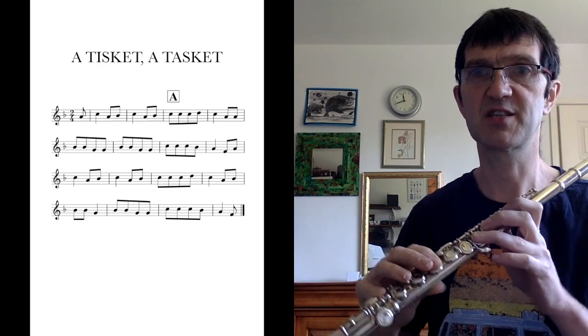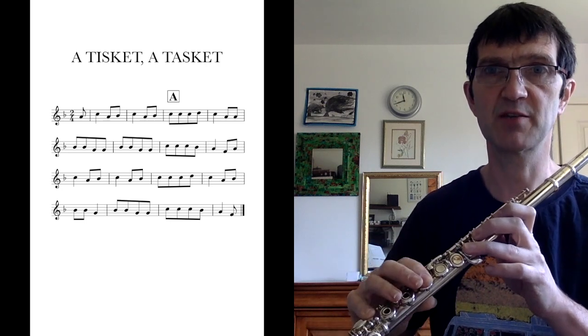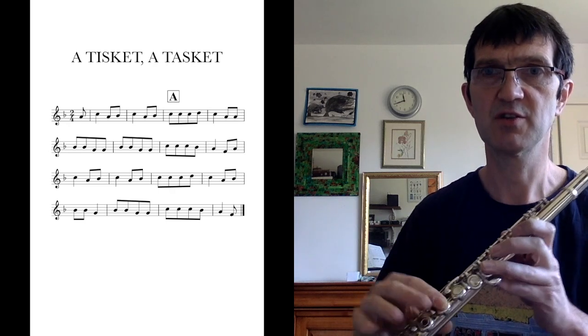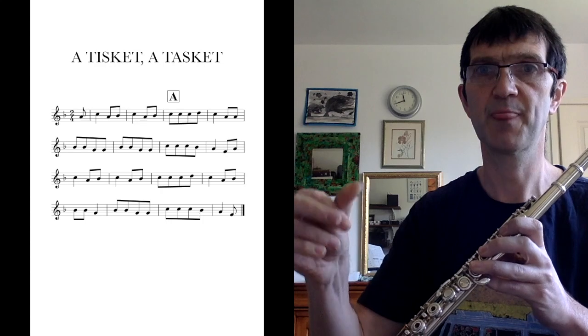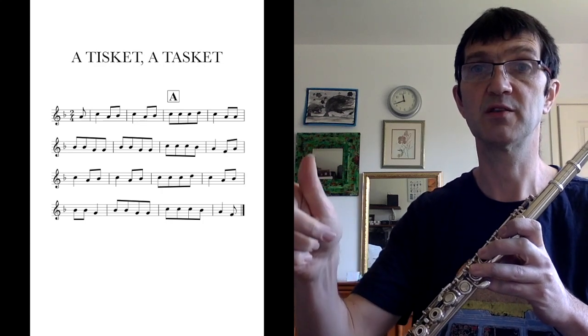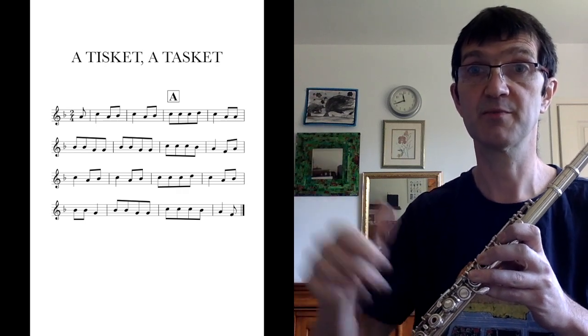Now, it starts on an upbeat. So, it's not on the strong down beat, but on the weaker upbeat, just before the strong beat starts. So, when you count yourself in, you start like this: one, two, one, two, a Tisket, a Tisket. Okay.